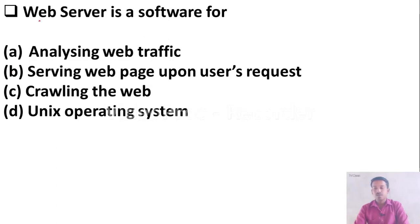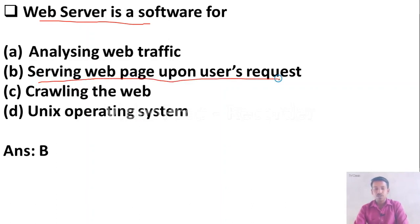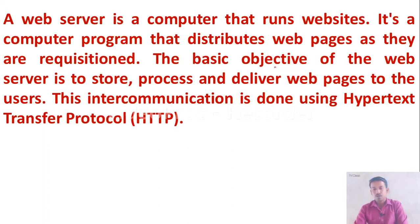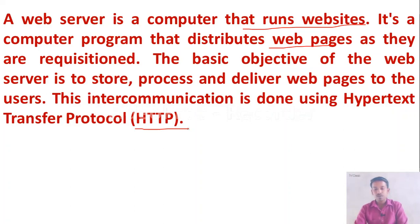Web server is software for — Option A: analyzing web traffic, Option B: serving web pages upon user's request, Option C: crawling the web, Option D: Unix operating system. The right answer is Option B. A web server is a computer that runs websites and distributes web pages as they are requested. Its basic objective is to store, process and deliver web pages, with intercommunication done through HTTP (Hypertext Transfer Protocol).